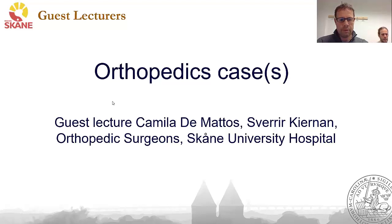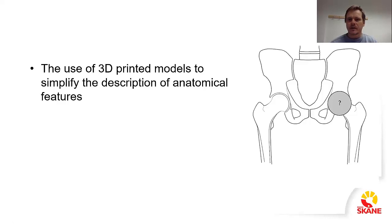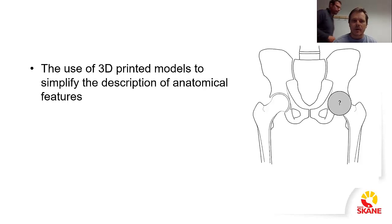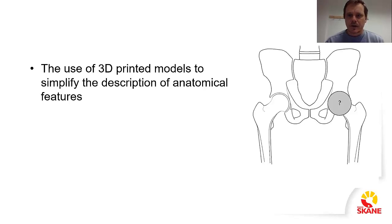My name is Sverig Keran, and I'm an orthopedic surgeon doing research on how to find ways to restore the biomechanical anatomy and function of hips after total hip replacements. My problem has always been to try to, in a simple way, describe the different variables in the anatomy, because it's 3D and I'm trying to draw pictures in 2D and it doesn't work so well.